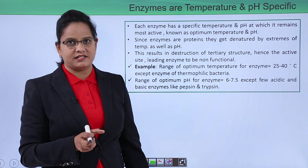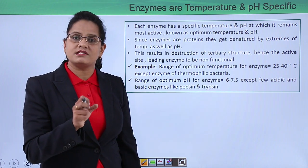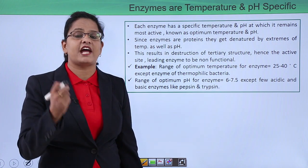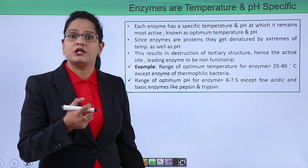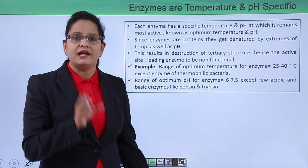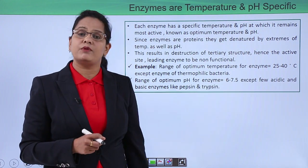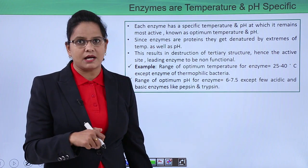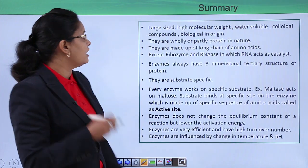The optimum temperature range for most enzymes is around 25 to 40 degrees Celsius, except for thermophilic enzymes found inside thermophilic bacteria, which function at extremes of temperature around 70 degrees Celsius. Similarly, the optimum pH range is 6 to 7.5, except for some acidic enzymes found in our stomach like pepsin, and trypsin which is a basic enzyme.